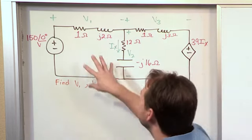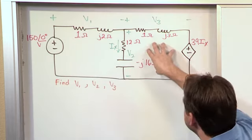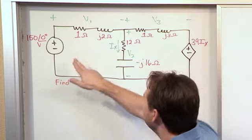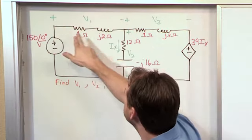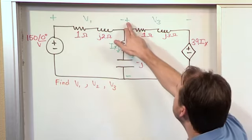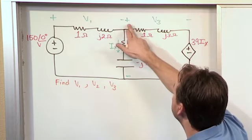Here we have this problem. Clearly there are two meshes here. We have this one here and this one here. And I'm trying to solve for the three voltages: V1, which is defined to be across this impedance; V2, which is defined to be across this impedance; and V3, which is defined to be across this impedance.